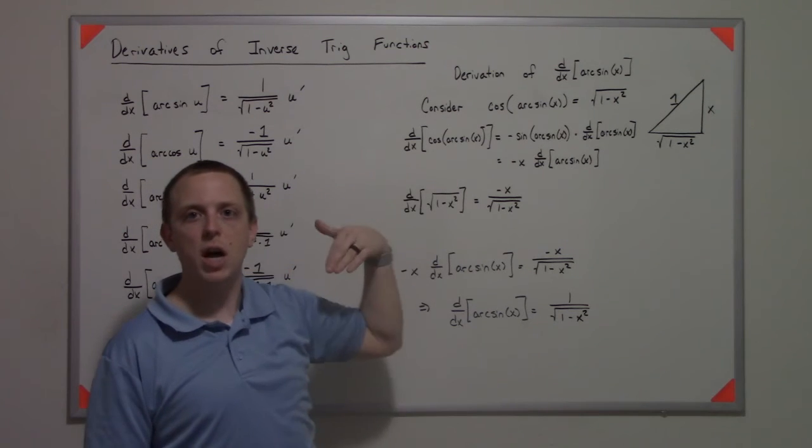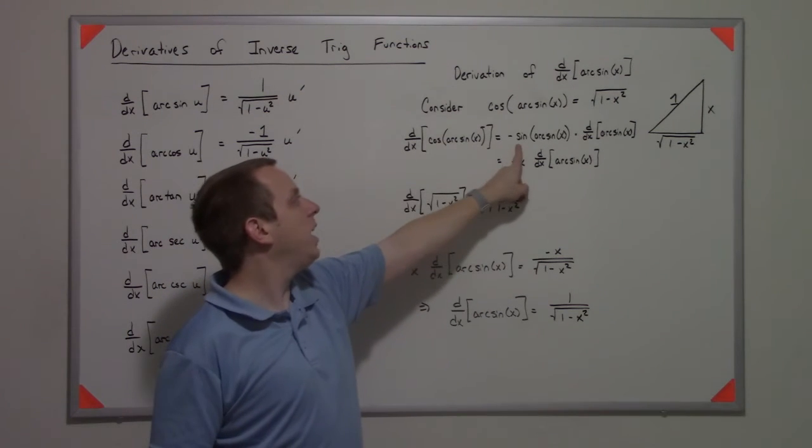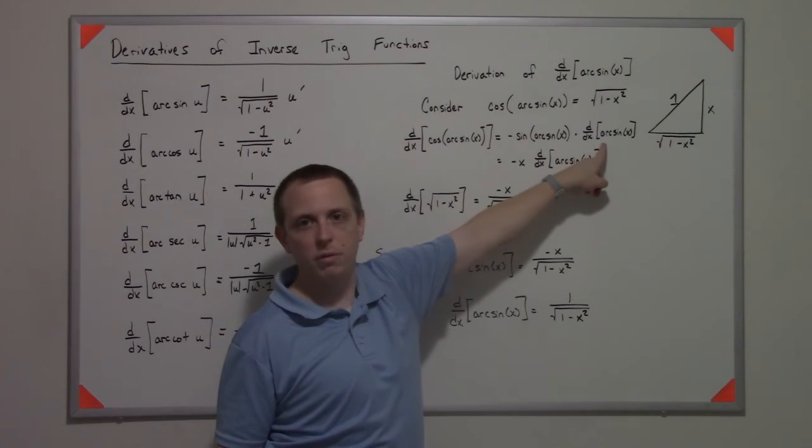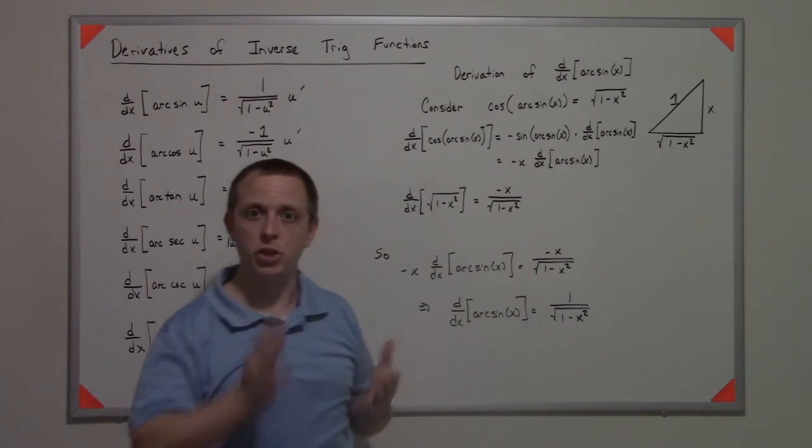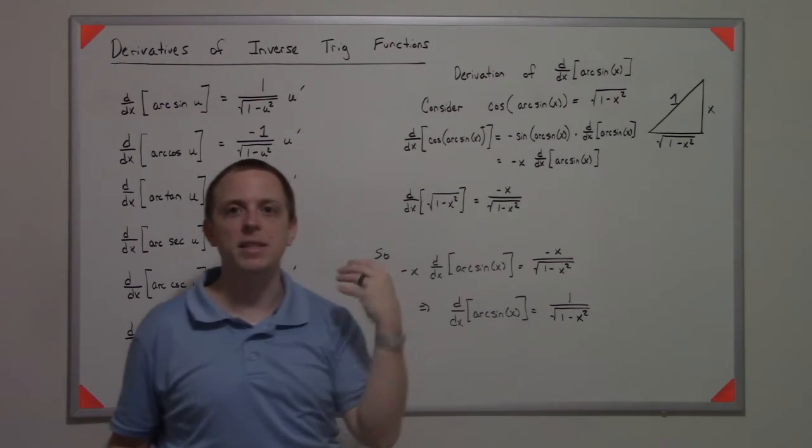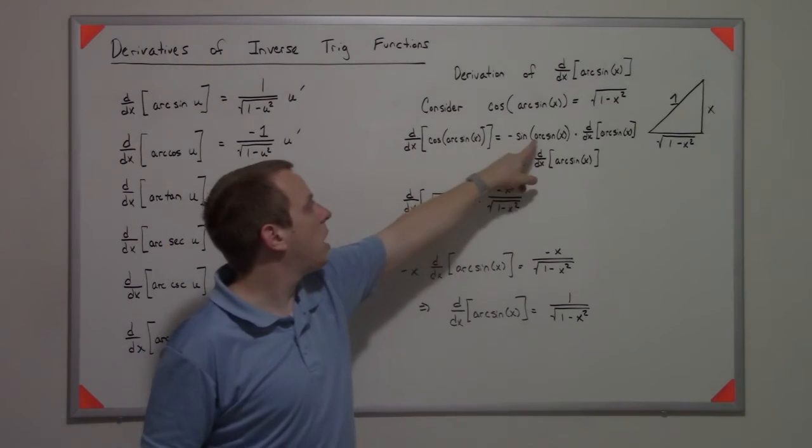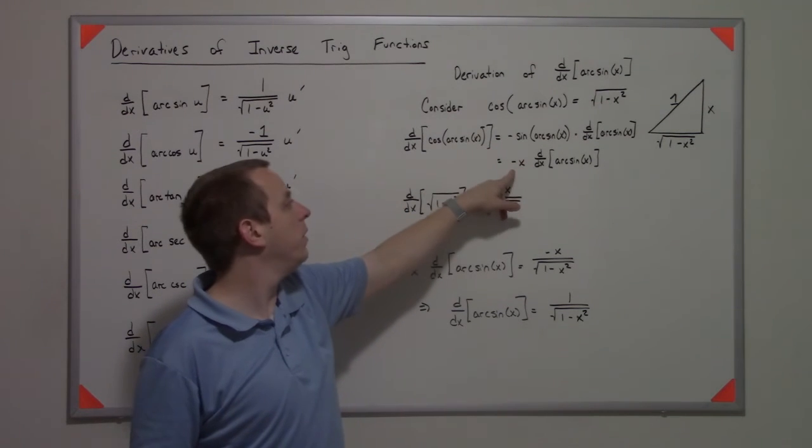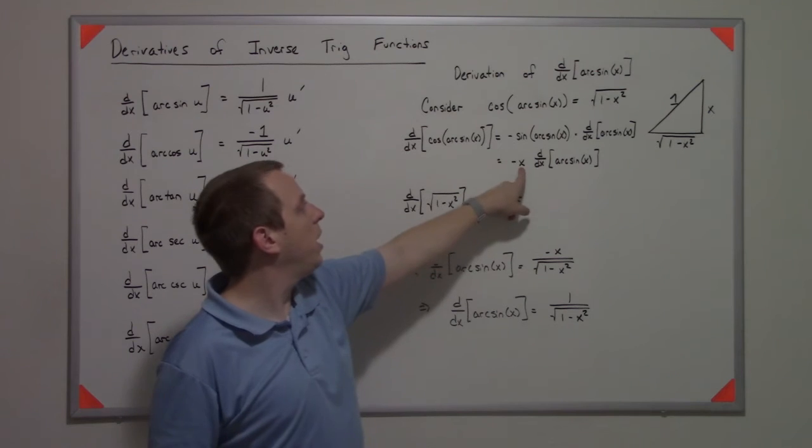If I take the derivative of this piece, I have cosine of something. So the derivative of cosine of something is negative sine of that something times the derivative of that something. But we know that sine of arc sine is just x, with that dangling negative on the outside.